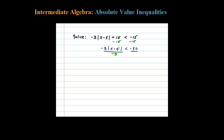Now let's be careful here — when I divide by negative 3, remember that when you divide or multiply by a negative number you have to reverse the inequality. So what used to be less than is now greater than 10. On the left side the negative 3's cancel, and on the right side negative 30 divided by negative 3 is 10.